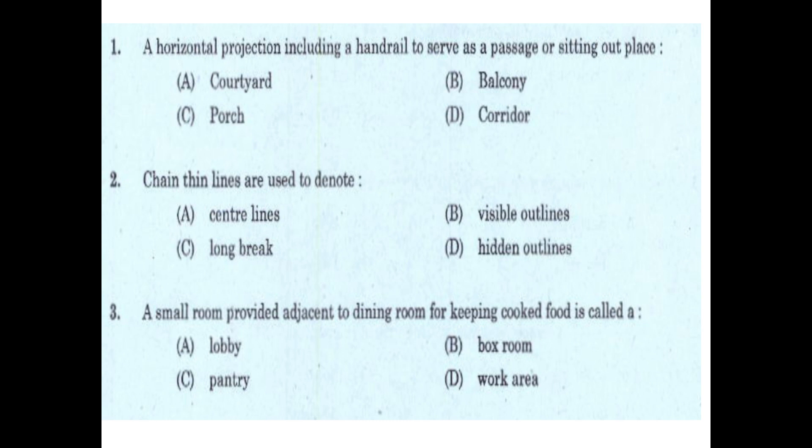First question: a horizontal projection including a handrail to serve as a passage or sitting-out place. Options are: court, balcony, porch, corridor.